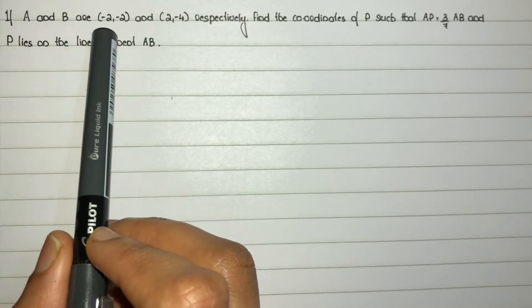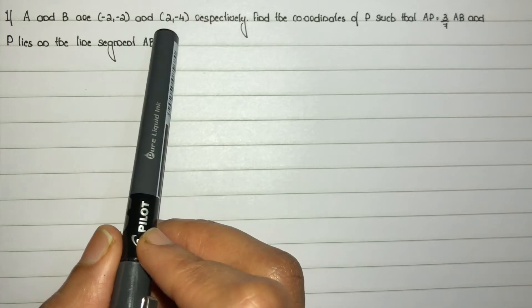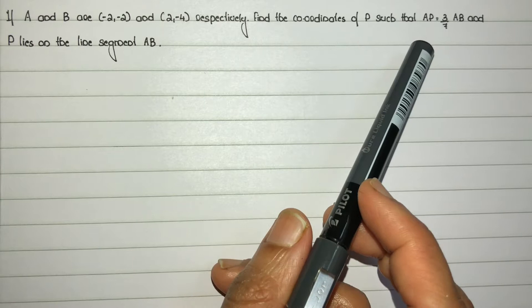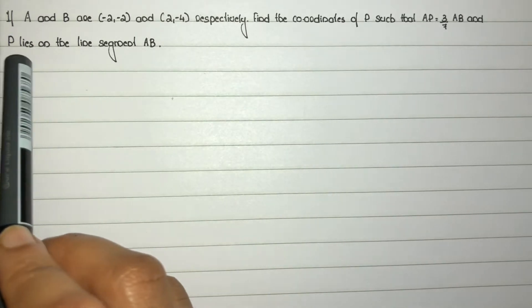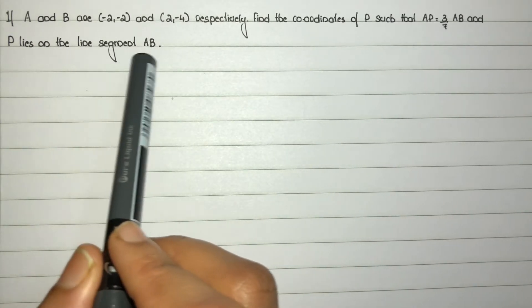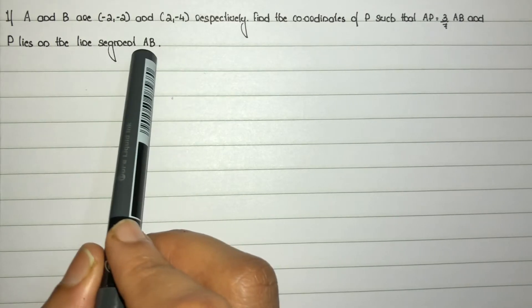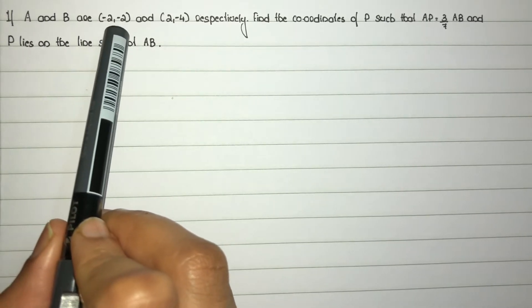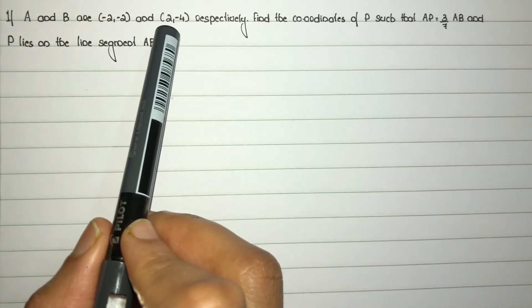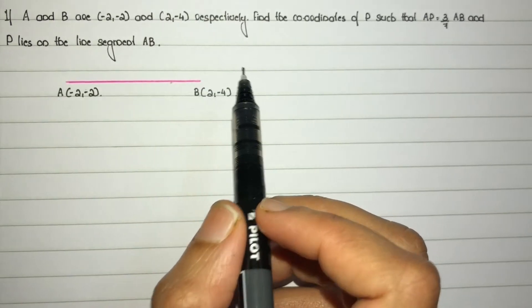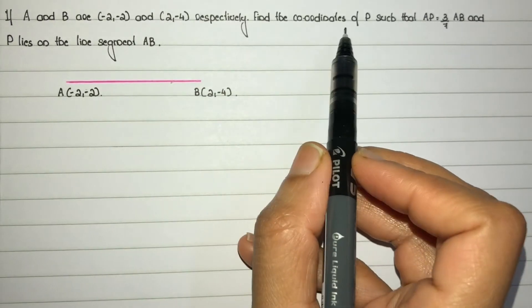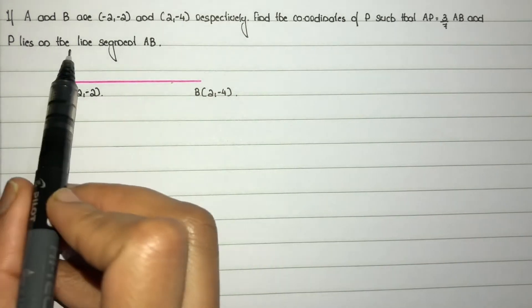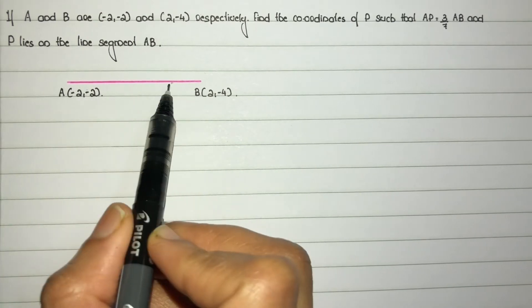If A and B are (-2, -2) and (2, -4) respectively, find the coordinates of P such that AP equals 3/7 of AB, and P lies on the line segment AB. So first, consider A at coordinates (-2, -2) and B at coordinates (2, -4). We need to find the coordinates of P, which lies on the line segment AB.